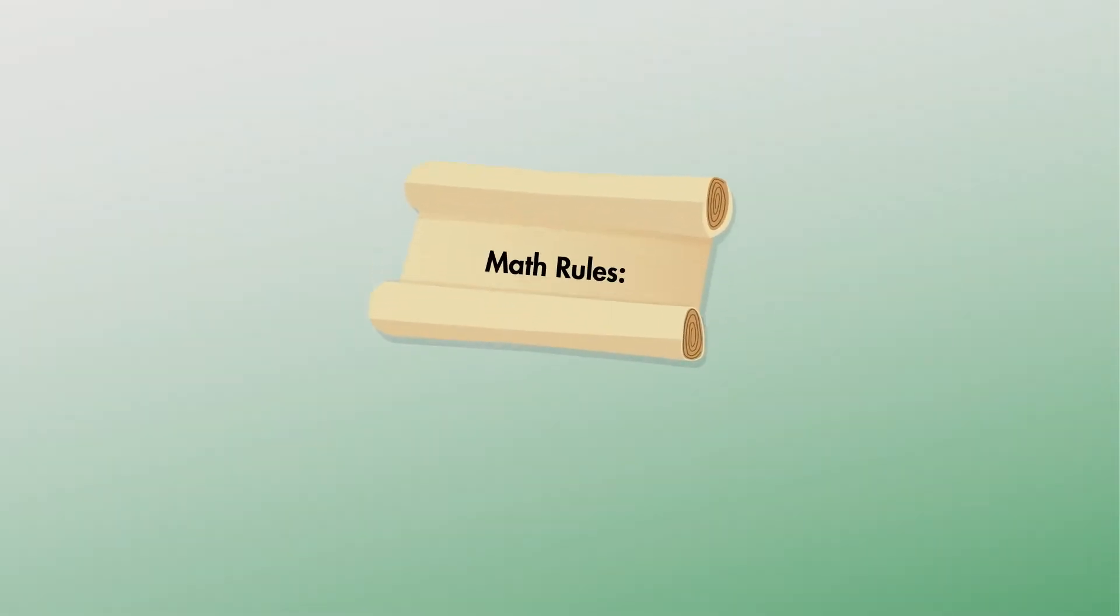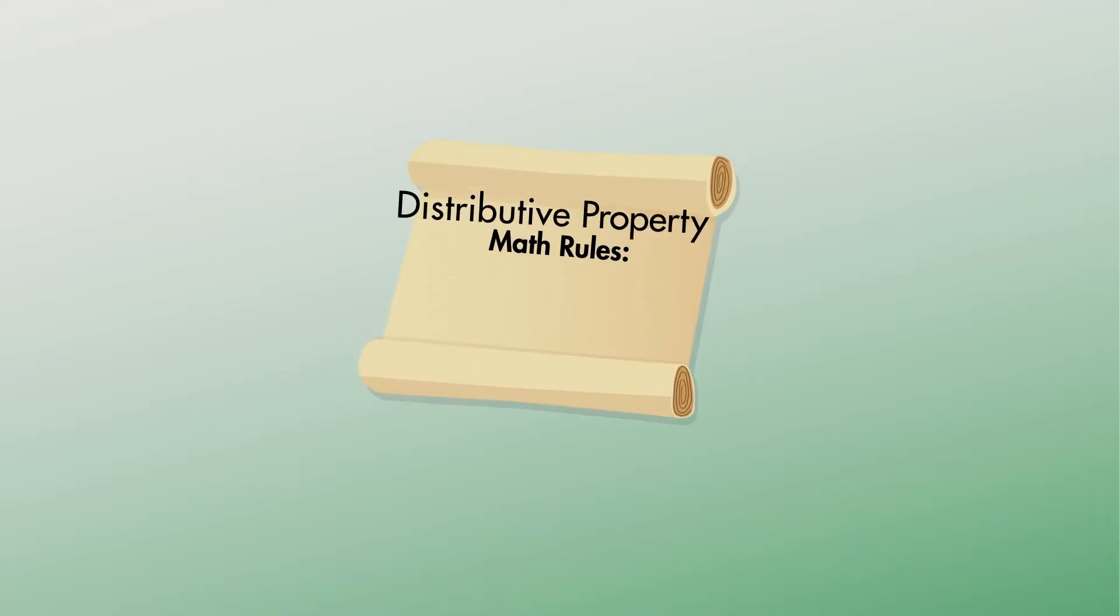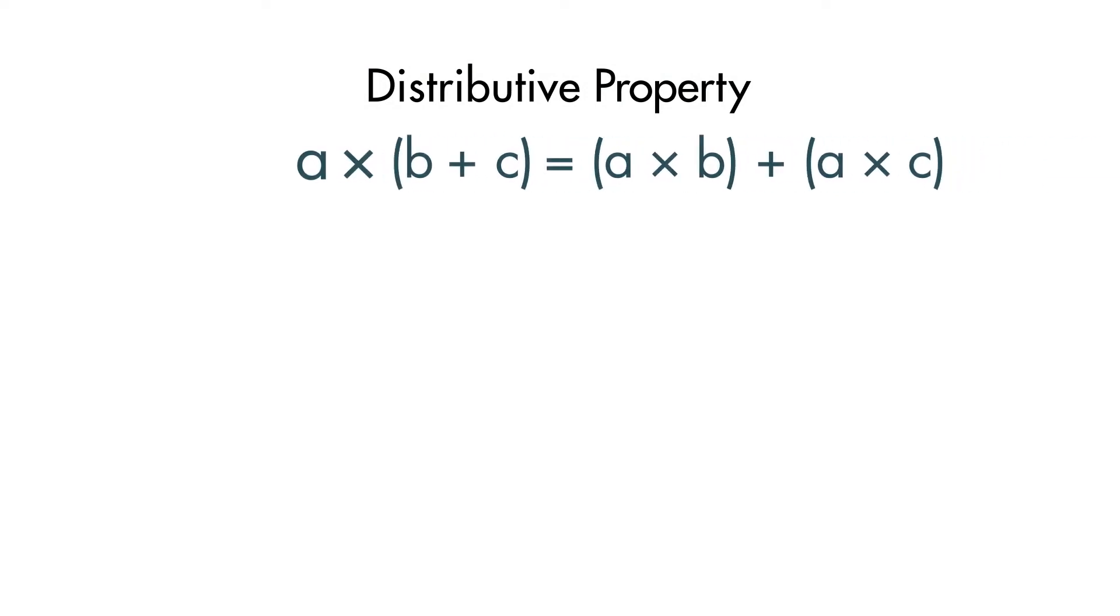A property in math is a rule that works the same way every time. The Distributive Property helps us find the product by multiplying each addend separately.